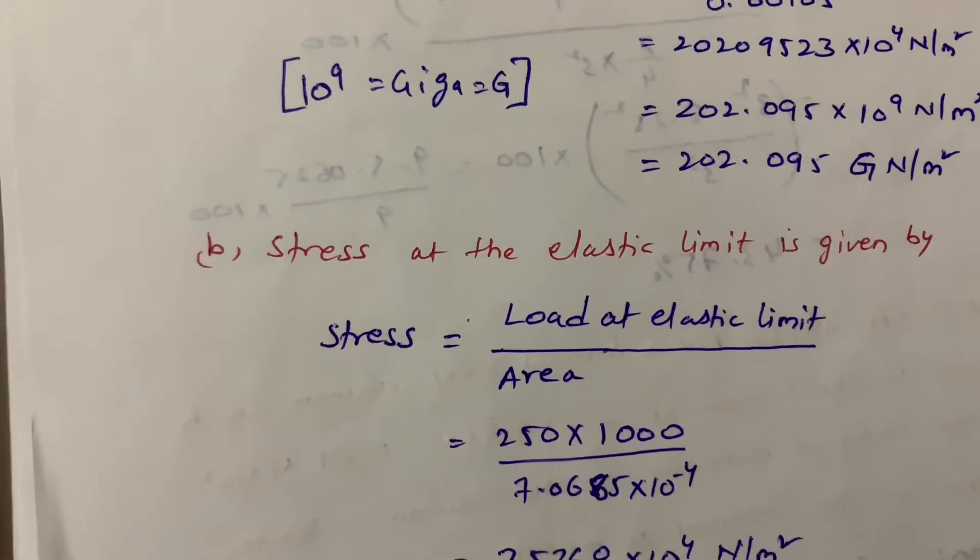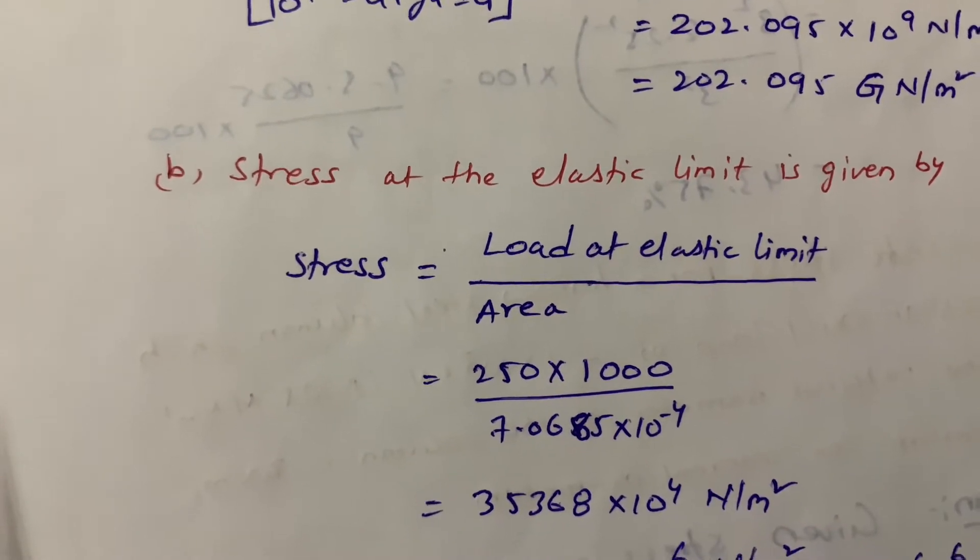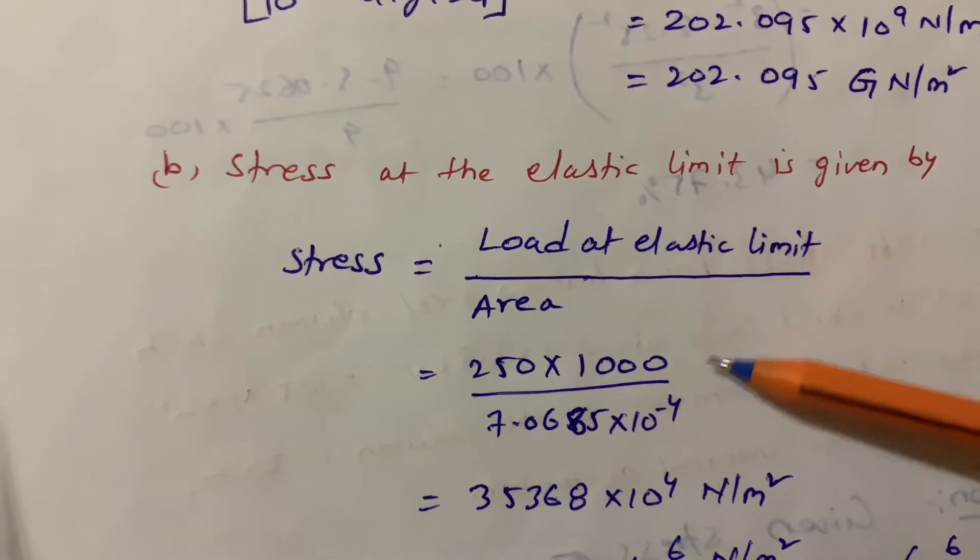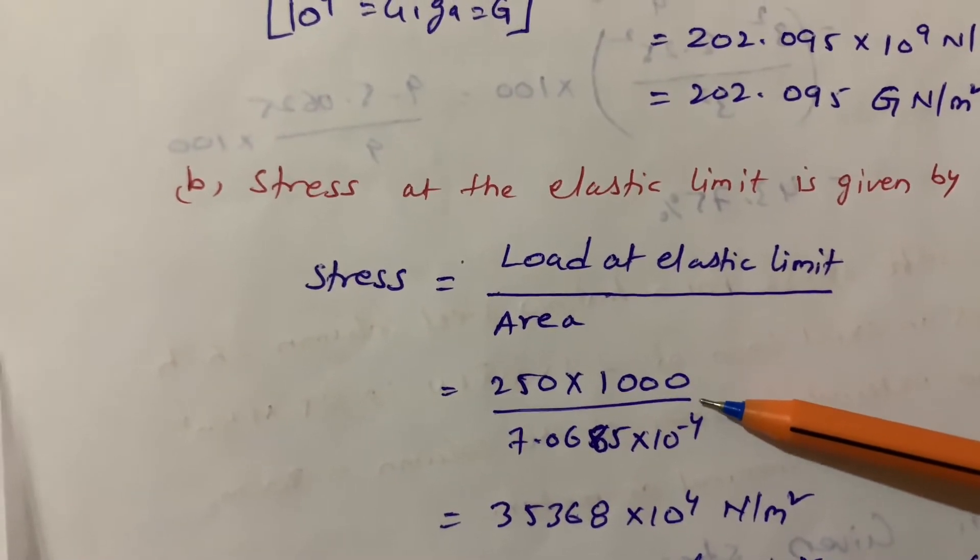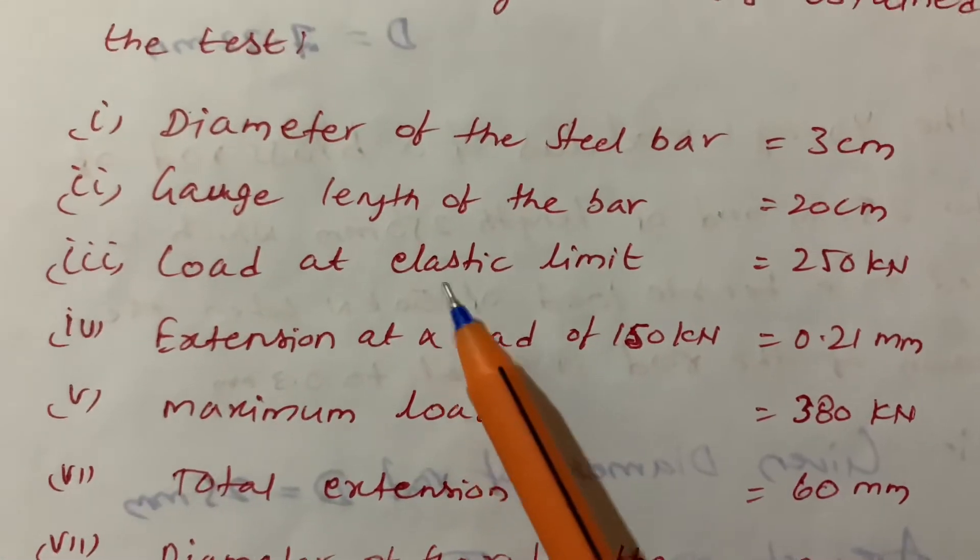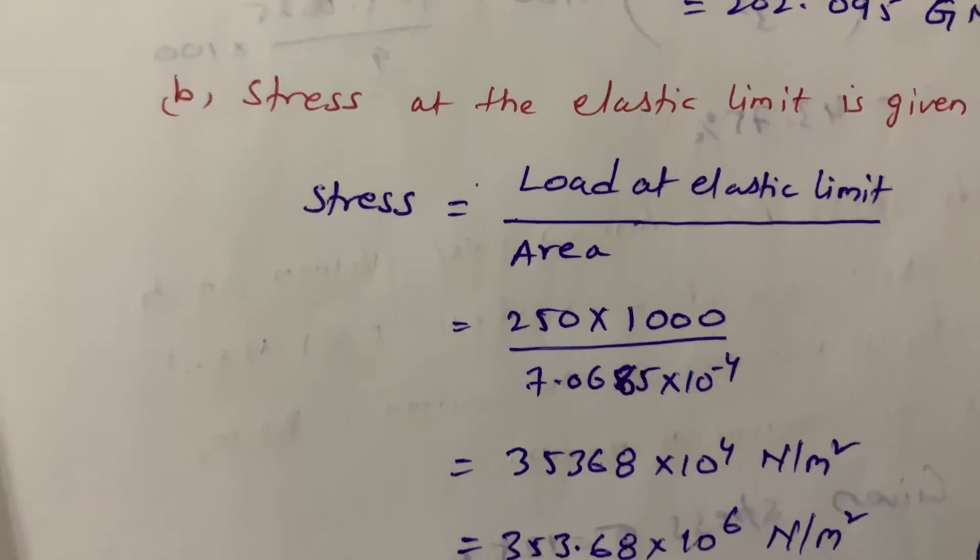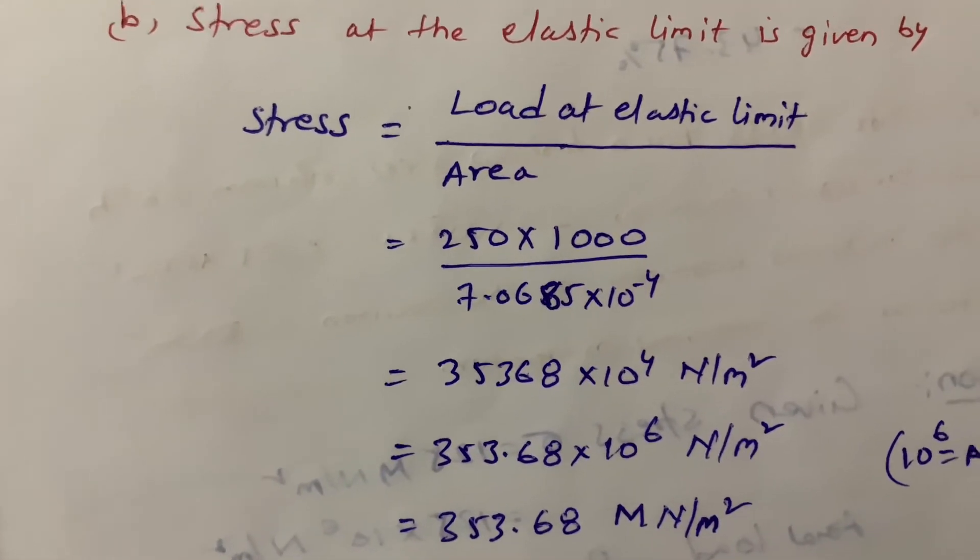Second one is stress at elastic limit. Stress equals load by area. The load at elastic limit is 250 kN, so 250 times 1000 divided by the area. I got 353.68 times 10 to the power 6 N per meter square, which is megapascals.